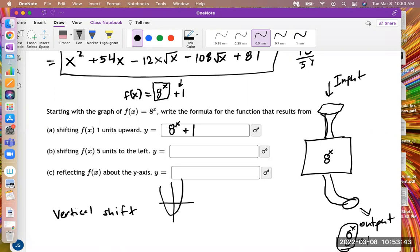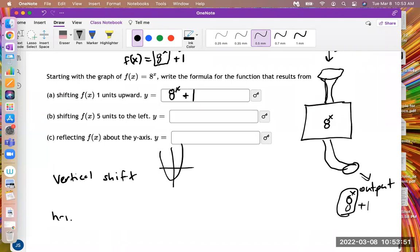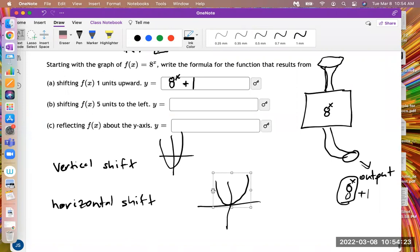Then it says shifting f(x) 5 units to the left. So now this is called a horizontal shift. If I have, let's say just, and this is not what the function 8 to the x looks like, it doesn't look like a parabola like this, but I'm just using an example. This is what your original function looks like. And then you shift to the left, then it looks like this. You just move, pick up and move to the left. That's a horizontal shift. You're moving to the left.